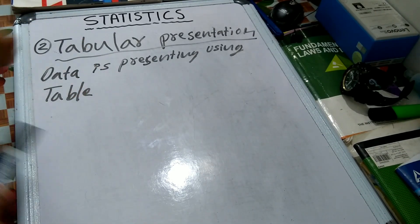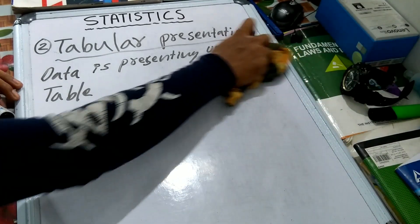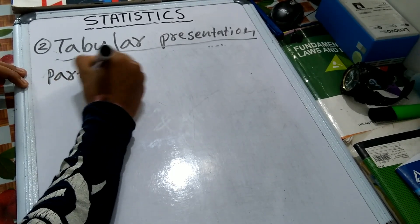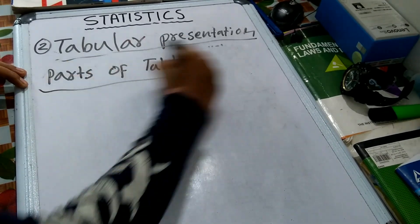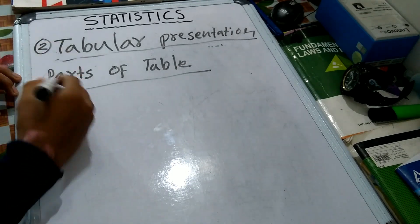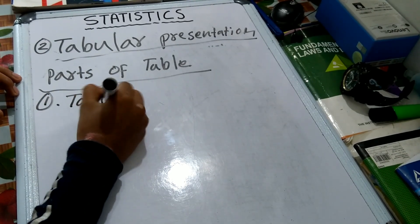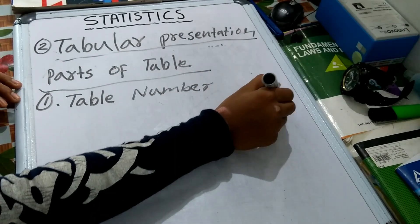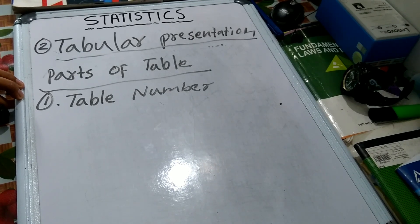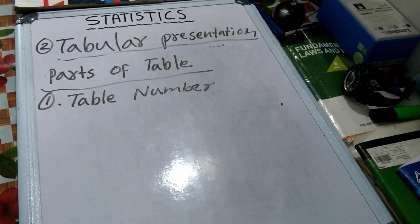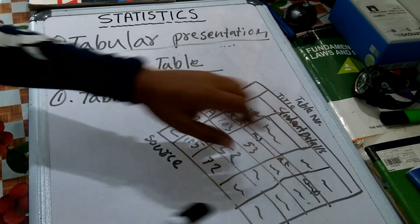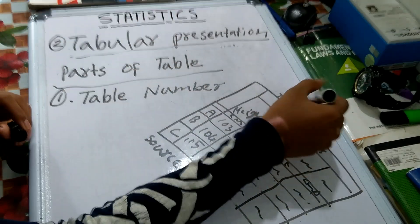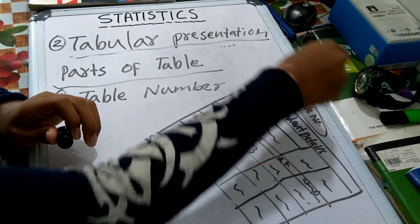And that table we apply with parts to make it. Now we look at the tabular parts of a table. Parts of the table — what are the parts of the table? First, we have the table number. I will just write the table number. If you have one or two, then you have a table number.